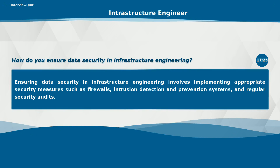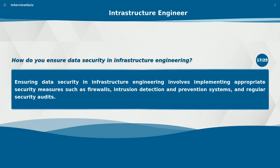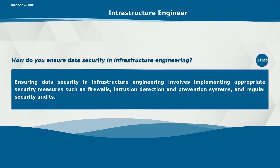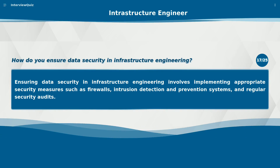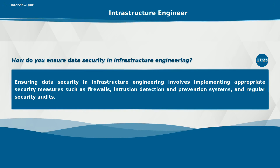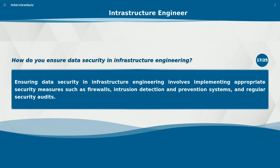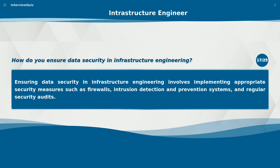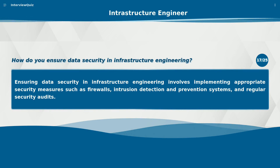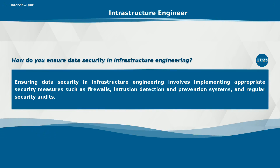How do you ensure data security in infrastructure engineering? Ensuring data security in infrastructure engineering involves implementing appropriate security measures such as firewalls, intrusion detection and prevention systems, and regular security audits.